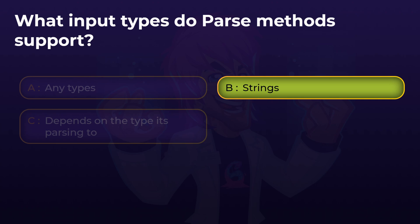Parse doesn't accept any type as input. It can convert to almost any type, based on whether a parse method is available, but it only ever accepts a string. You always parse a string to something else — it's never a number being parsed. We are parsing a string to possibly convert it to a number, but we always convert the type string using the parse method.